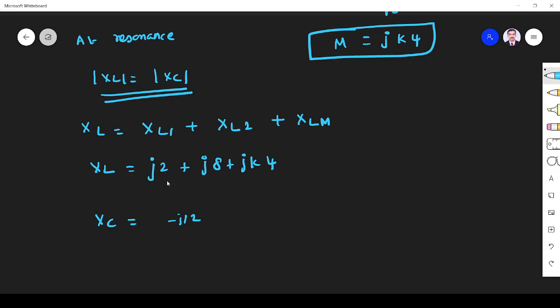The magnitude of XL is |j2 + j8 + jk4|, which is |j10 + jk4|. This equals |XC| which has magnitude j12.